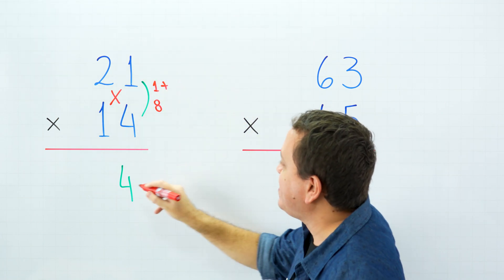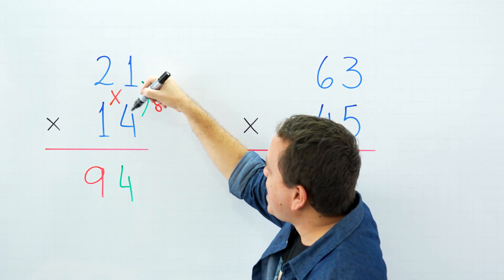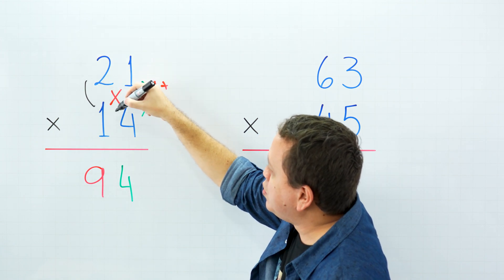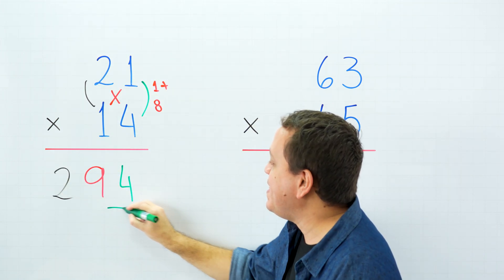1 plus 8 gives us 9. In the last step, we just need to multiply the digits on the left side, and 2 times 1 is 2. That's it, our final answer is 294.